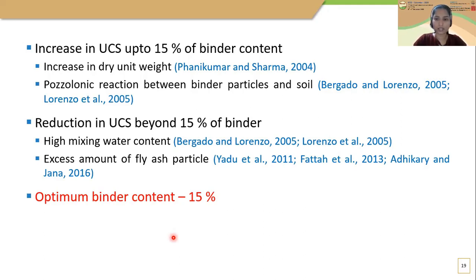Beyond 15% fly ash, total water in the soil sample increased with binder content. If water content is too high, it causes clay particles to repel each other, losing their electrostatic attraction. The excess amount of binder introduced in the soil can also cause formation of weak bonds. Because of these reasons, the UCS value of the treated sample decreased beyond 15% binder content.